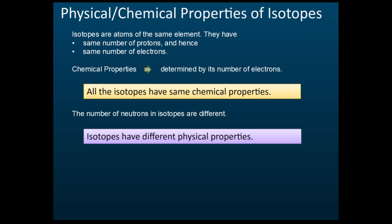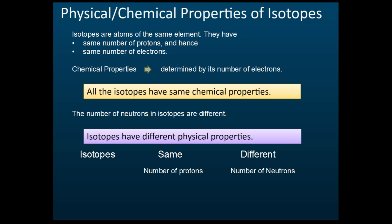For isotopes, the number of neutrons is different, and that difference causes different physical properties. The density will be higher if they have more neutrons. So isotopes have the same number of protons, different number of neutrons, same chemical properties, but different physical properties — such as boiling point, melting point, color, and density.